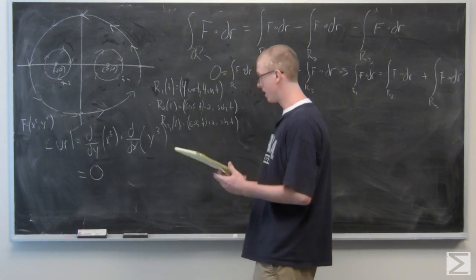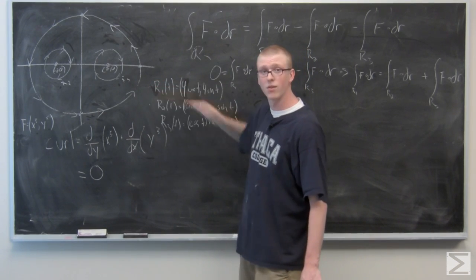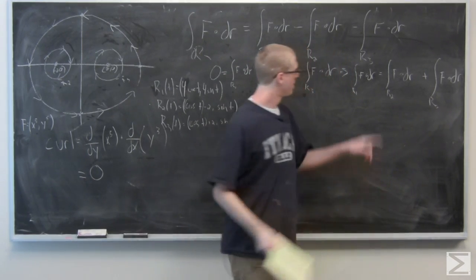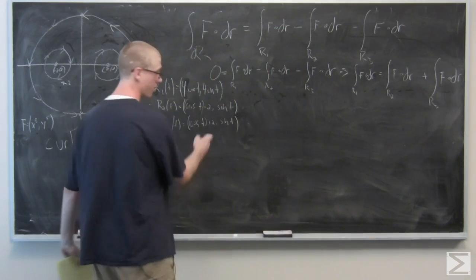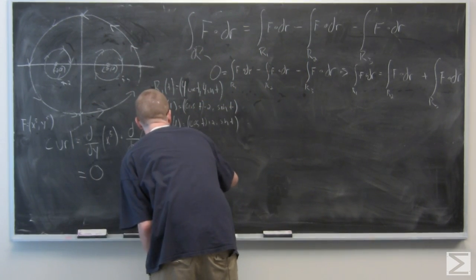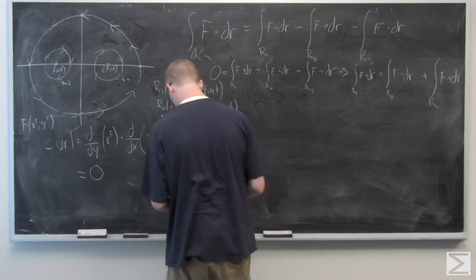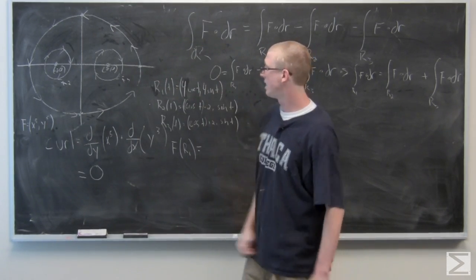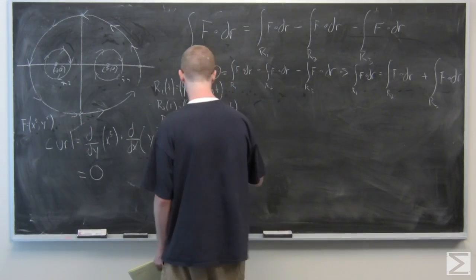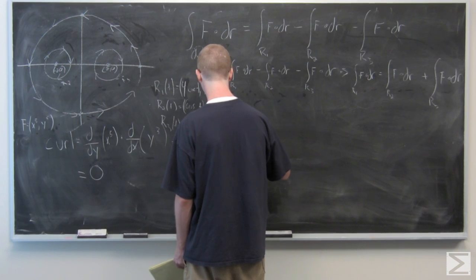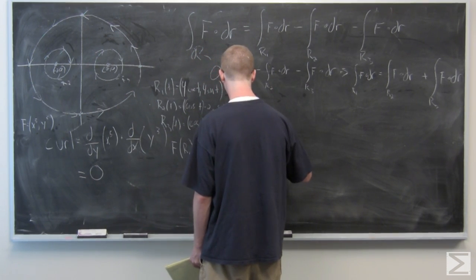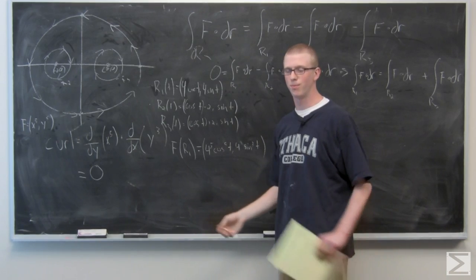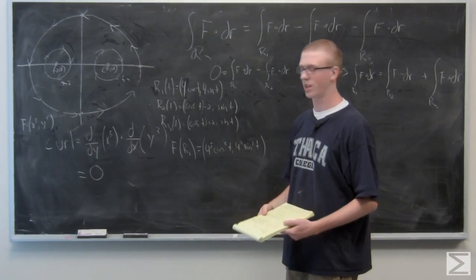Now we need to plug in and find f(r1), f(r2), and f(r3). For f(r1), we plug in 4cos(t) wherever we see x and 4sin(t) wherever we see y. You can already see why the problem doesn't ask us to evaluate the integral — this would be an extremely complex integral to calculate.